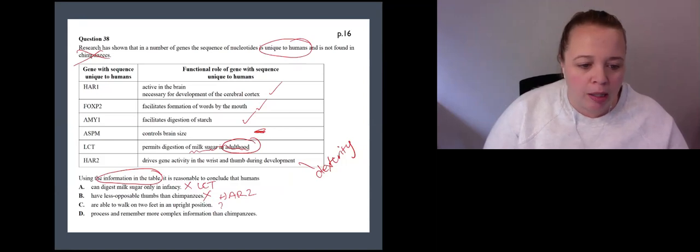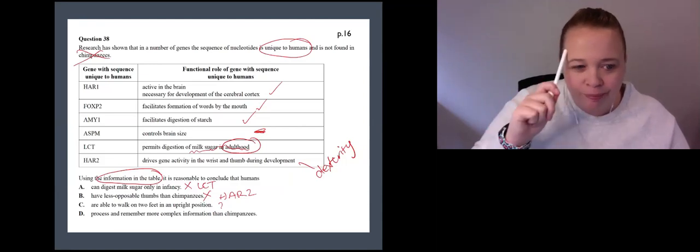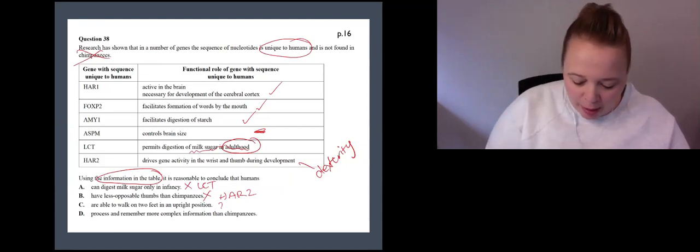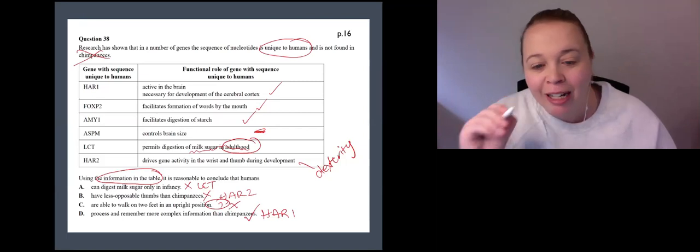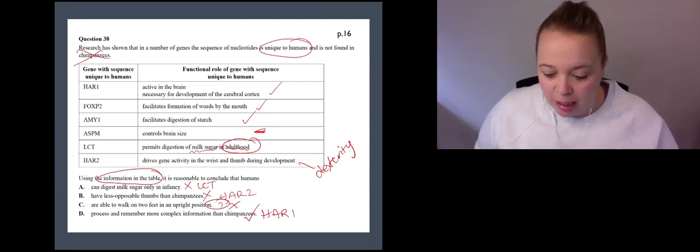And we are able to process and remember more complex information than chimpanzees. So what does that link me to? Active brain that links me to HA1. So we are definitely able to do that. There is no gene here that talks about bipedalism. So therefore using the information in the table, the answer must be D.